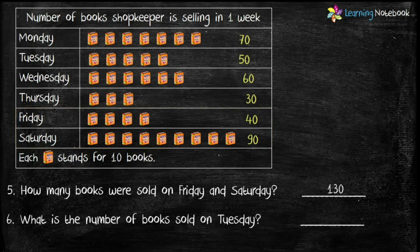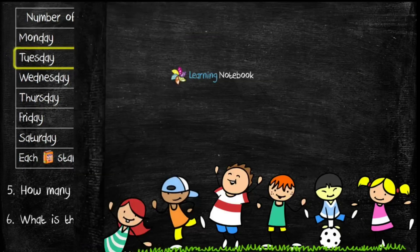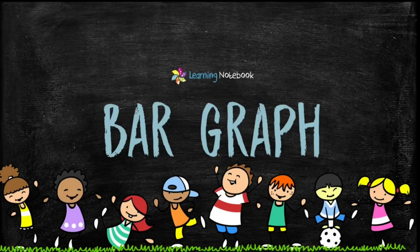Last question: What is the number of books sold on Tuesday? As you can see, the number of books sold on Tuesday is 50. Now let's see how to represent data through a bar graph.